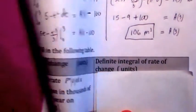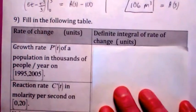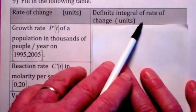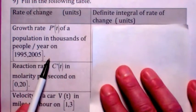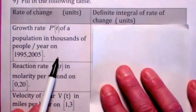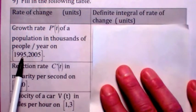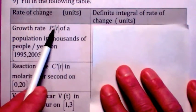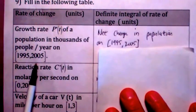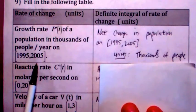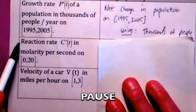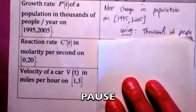Let's look at units. If you're given the rate of change, what would the definite integral of the rate of change be? For example, if p prime of t is in people per year, the integral of p prime of t from 1995 to 2005 would be the net change in population. The units would be thousands of people.